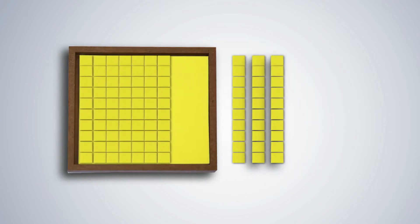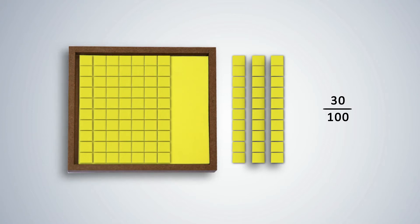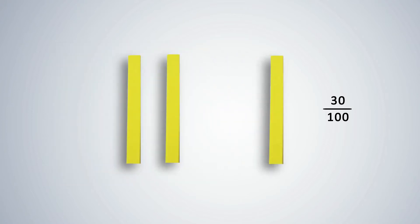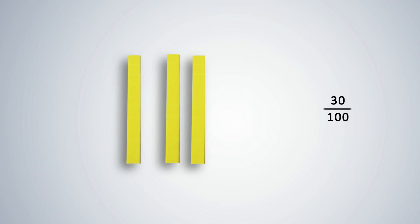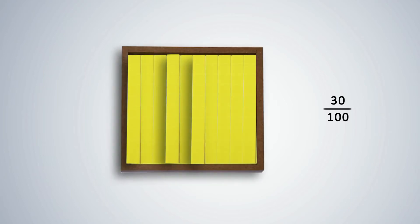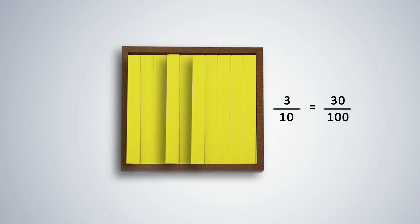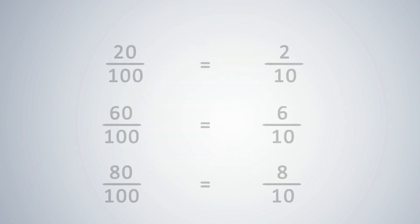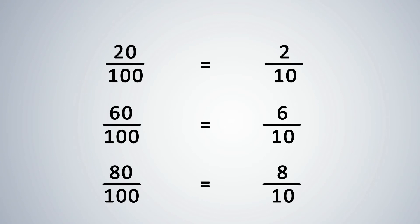If we have 30 parts out of 100 parts, we write it as 30 upon 100, which is also called 30 hundredths. These 30 squares are 3 strips of 10 each. We can also say 3 upon 10 is the same as 30 upon 100. Ask students to represent 20 upon 100, 60 upon 100, 80 upon 100, both as hundredths and tenths.